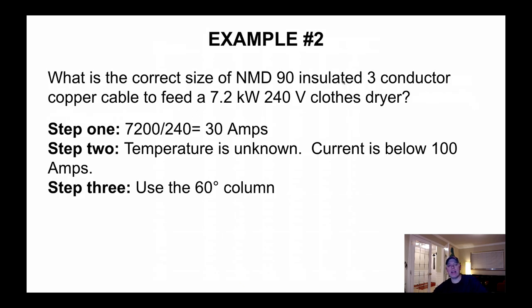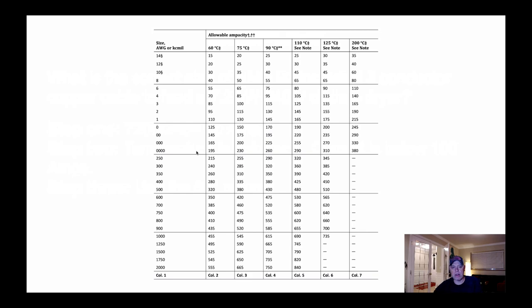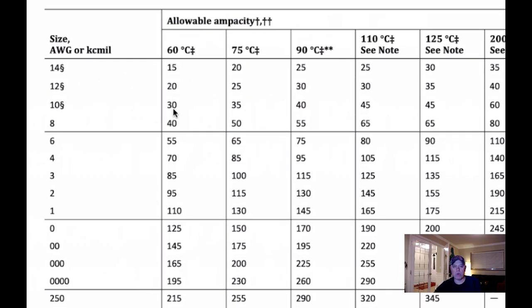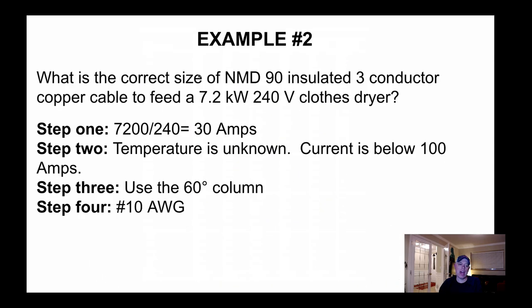Example 2: what's the correct size of NMD, insulated three-conductor copper cable to feed a 7.2 kW, 240-volt dryer? Step 1: take the power divided by the voltage — we get 30 amps. Step 2: temperature is unknown and current is below 100 amps. Step 3: use the 60-degree column for 30 amps — that gives us No. 10 wire. Step 4: the answer is No. 10. There's not a lot to it; it builds on what we covered in the last video on wire ampacity.